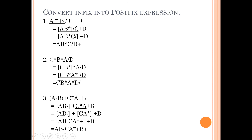Next example: c star b star a division d. Teeno ka precedence same hai — do star aur division — toh left to right. Pehle left wala star solve hoga: a b star. Phir yeh ek variable hai aur dusra ek variable — star peeche: a b star c star. Last mein division put karna hai: a b star c star d division.